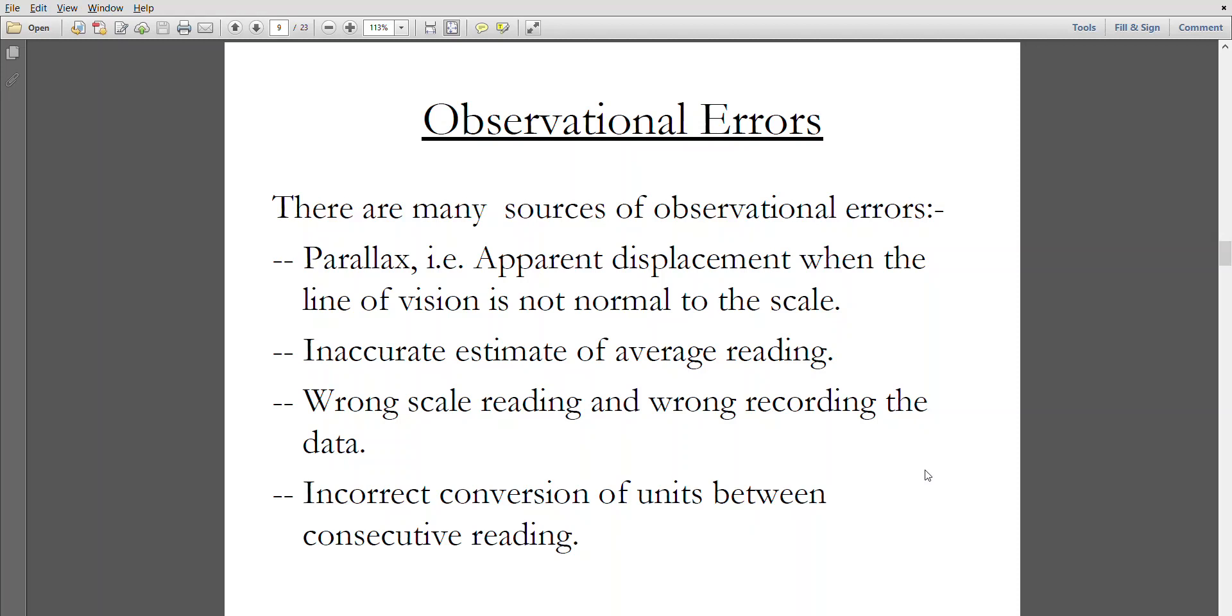Wrong scale reading, wrong recording of the data, incorrect conversion of units between consecutive readings - these are the main sources of observational errors. Parallax error, inaccurate estimation of average reading, wrong scale reading, wrong recording of the data, incorrect conversion of units between consecutive readings results in observation errors.